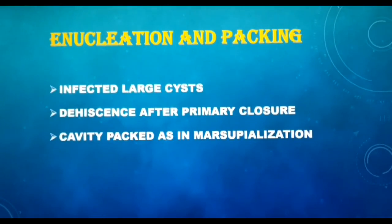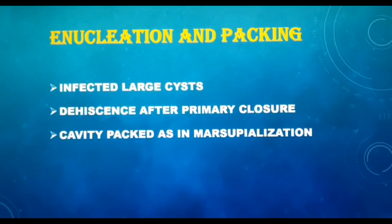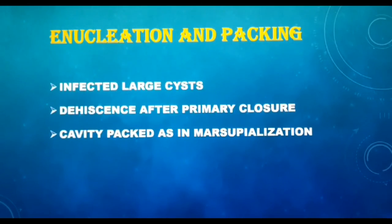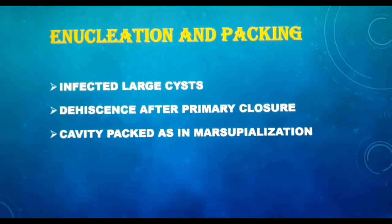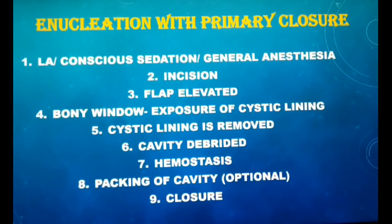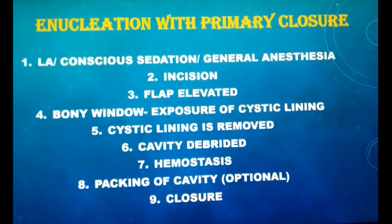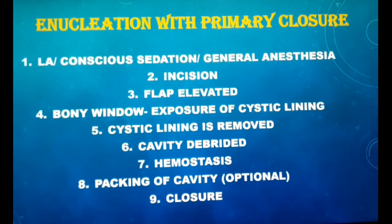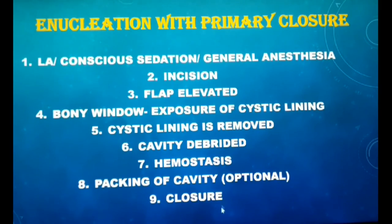Enucleation followed by packing is employed in infected large cysts or where there is wound dehiscence after primary closure. In this case, sutures are not placed; instead, the cavity is packed with gauze containing medication, similar to marsupialization. This is the first type of enucleation where the cyst cavity after enucleation is packed with gauze and left open. The second type is enucleation with primary closure, and students are expected to explain this technique when asked about enucleation.